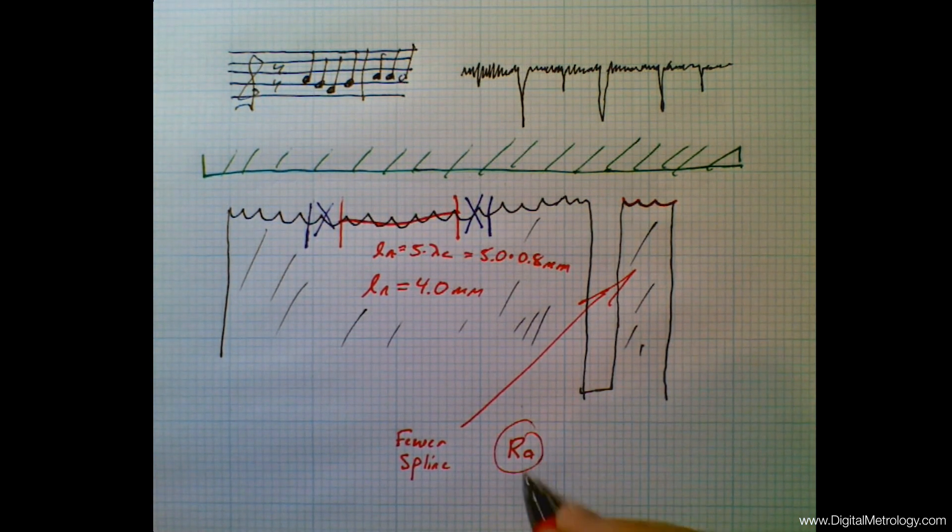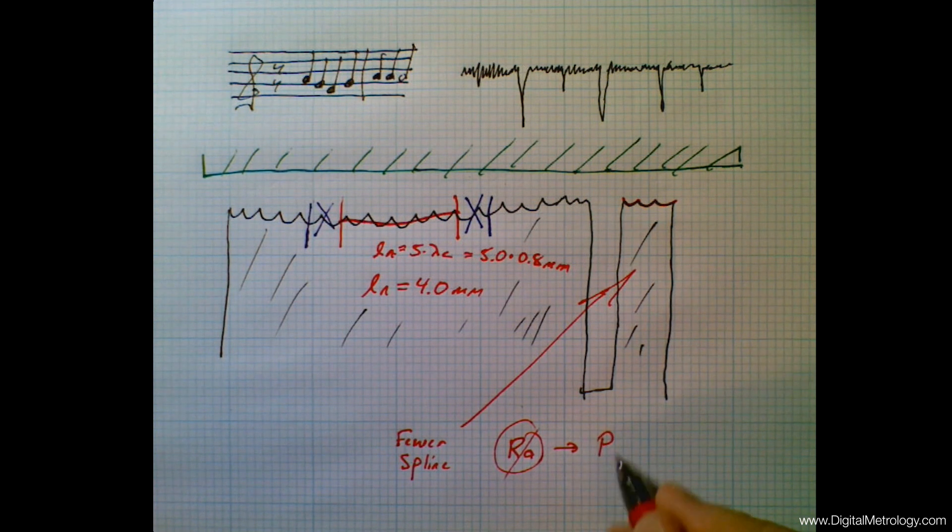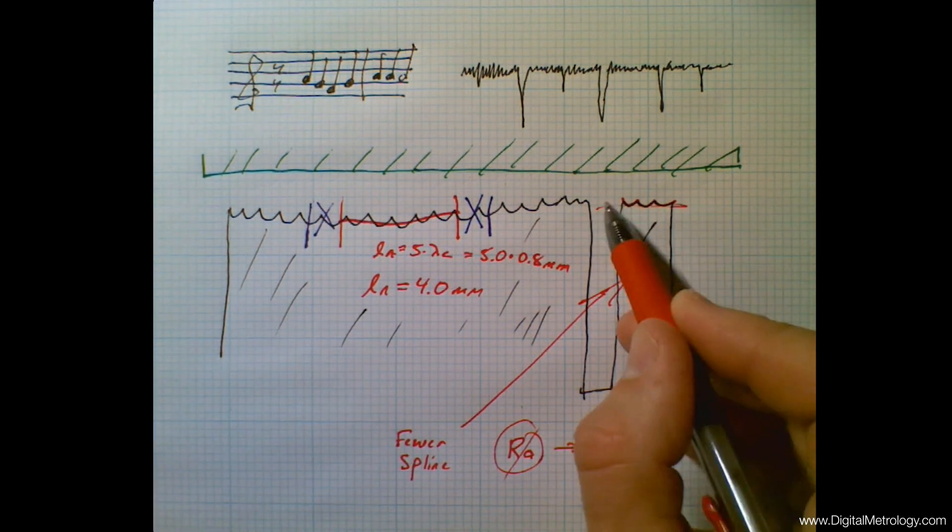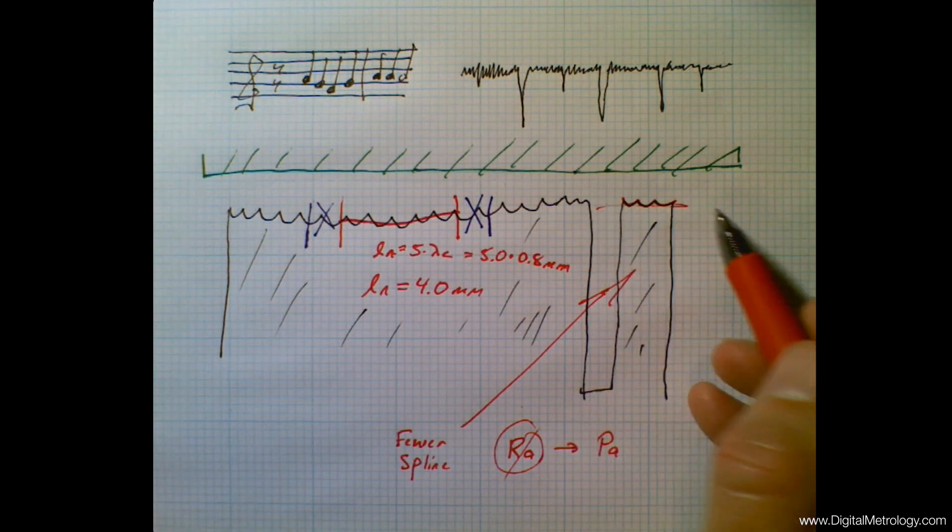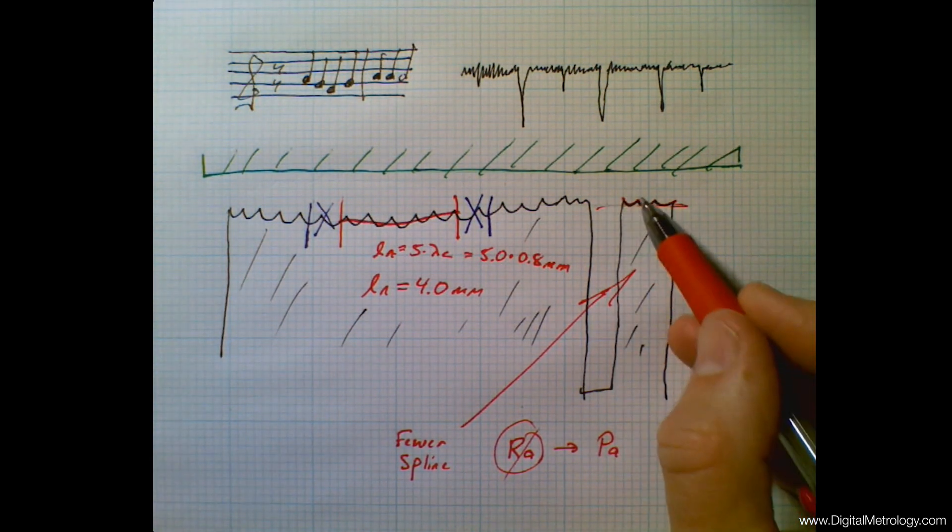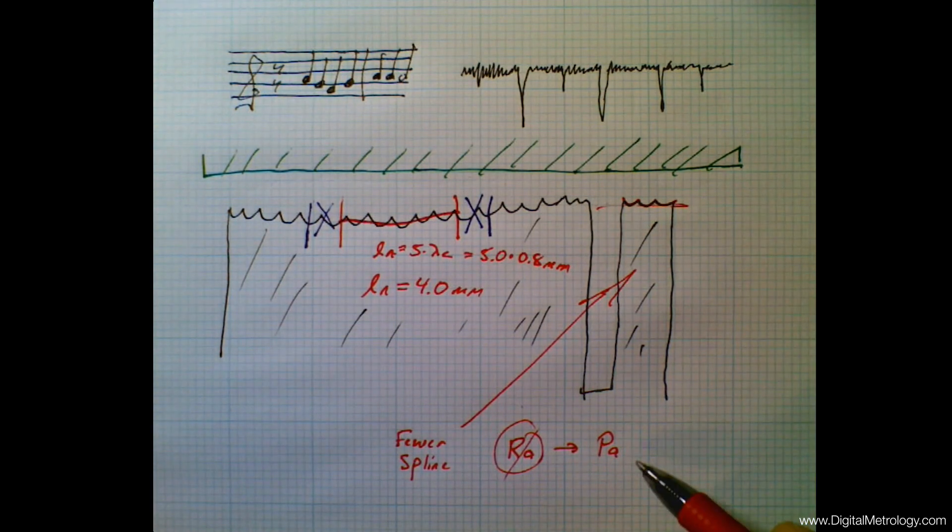But an ultimate approach that may work best for you if it's a very short surface is simply switch your world. Instead of looking at RA, let's use the parameter PA and simply level the surface with a line. Since it's very short that will act like a filter, and then we will retain all of the shape of the cusps in this case in a parameter very similar to RA.